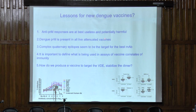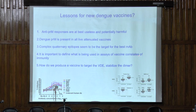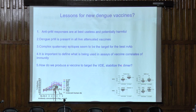Dengue pre-M is present in all live attenuated vaccines that have either been through or are about to go through phase three trials. Complex quaternary epitopes are the most potent neutralizing ones and probably the best to target for vaccine responses. Defining correlates of protection in dengue is a real challenge: you can get quite good in vitro correlates, but as you know, the vaccines have not proven as faithful as those in vitro correlates. We are working on stabilizing the dengue envelope protein dimer to use as a subunit vaccine, which would completely exclude the problems with precursor membrane protein.